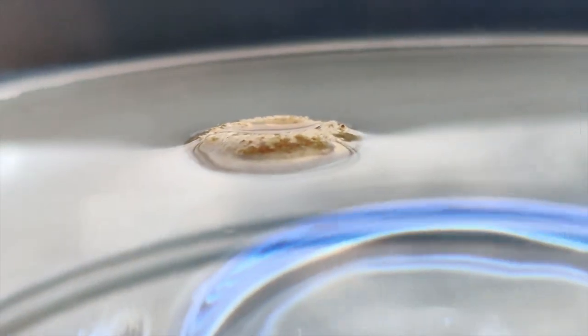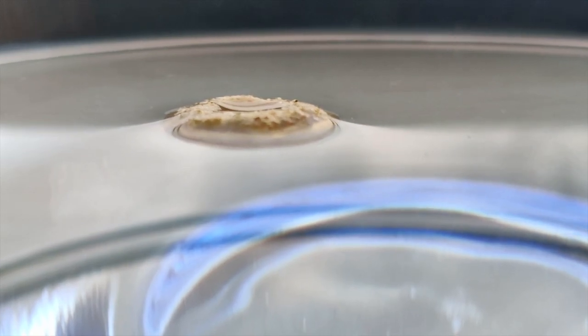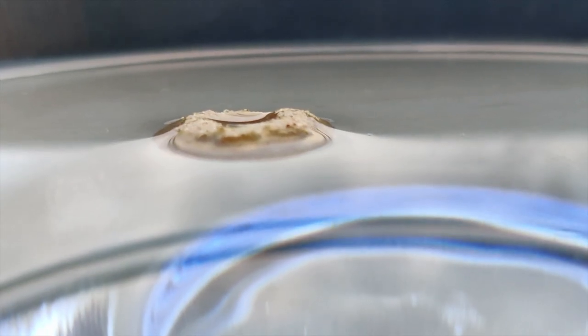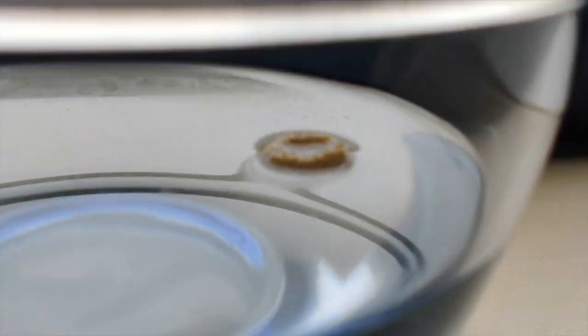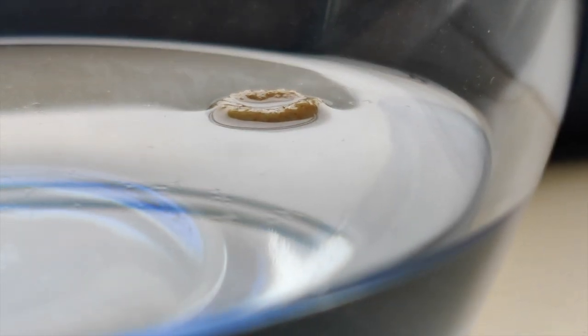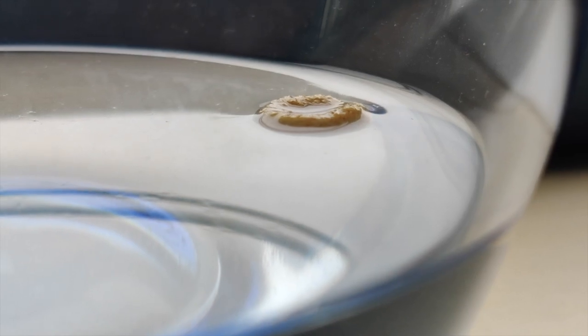We can see that the water slopes upward at the edge of the Cheerio, which is the key in what causes the Cheerios effect, which we will explain in more detail later. At the edge of the bowl, where adhesion similarly causes the water to curve upwards, the same effect happens. We can see that the initially nearly still Cheerio speeds up as it gets closer to the side of the bowl.